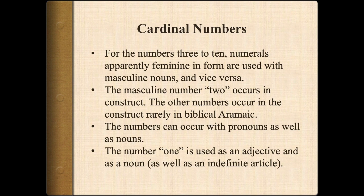The masculine number 2 occurs in construct in Biblical Aramaic, while the other numbers occur in the construct very rarely. Numbers can also occur with pronouns as well as with nouns, such as 'the two of them.'